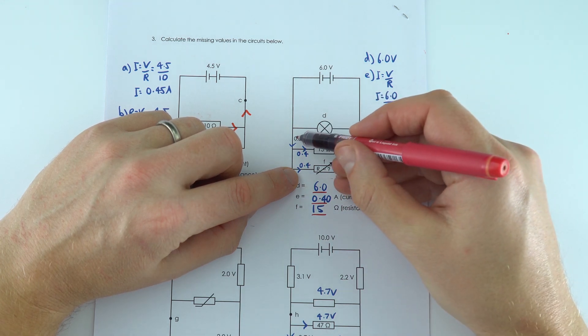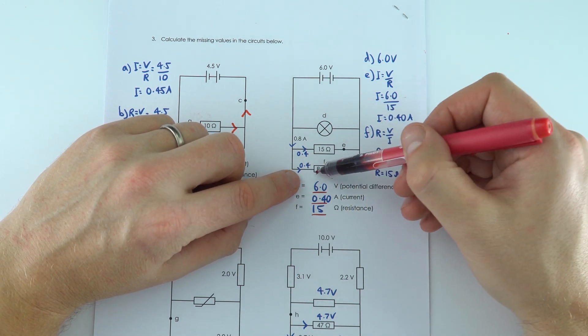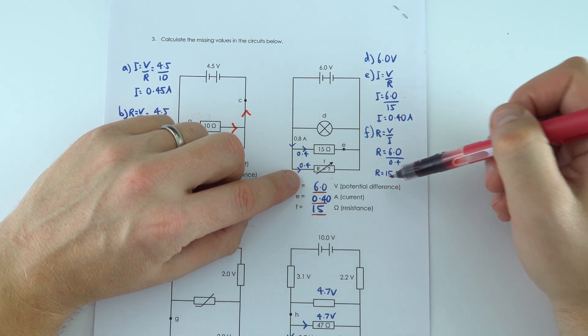So if we know this current, we've worked out that current, we can find out this current, and with this current and that potential difference we can find the resistance.